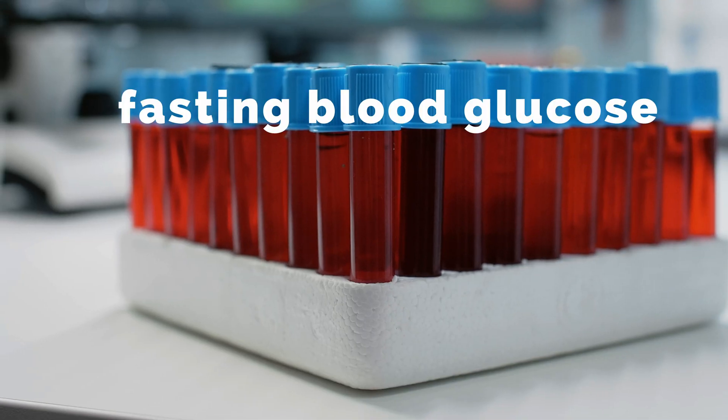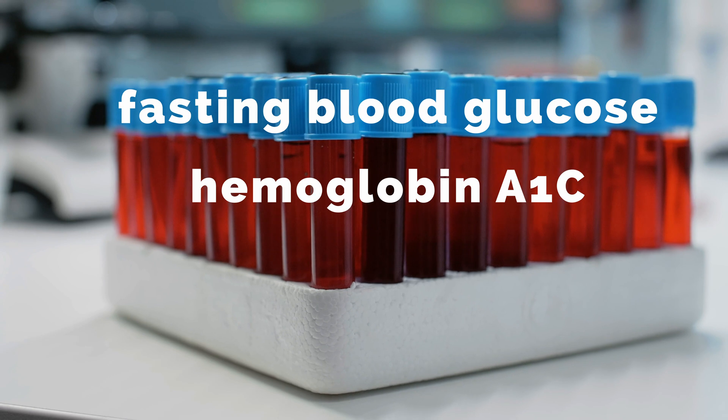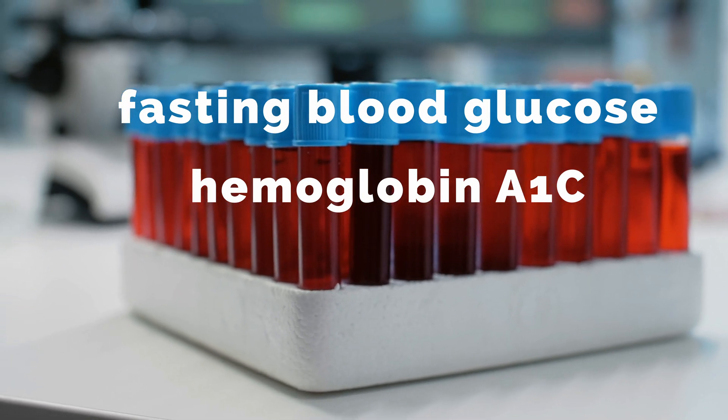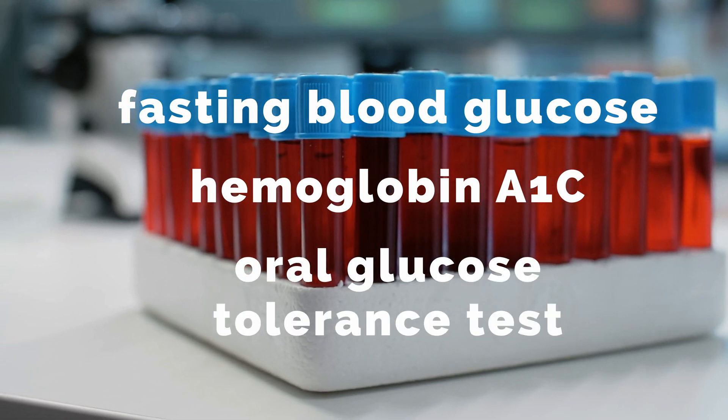Another thing to pay attention to is how the outcome was measured. In this study, the outcome of interest is prediabetes. This study used a few different markers in the blood samples to categorize a participant as having prediabetes: the fasting blood glucose that day, the hemoglobin A1c which tells us about blood glucose levels over the past three months, or results from an oral glucose tolerance test where they measured blood glucose levels two hours after drinking a sweet drink. If a participant had a prediabetic result on any of these measures, then they were categorized as having prediabetes. To me, that seems like a pretty good way to assess prediabetes status.